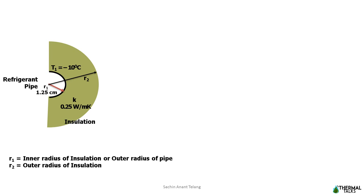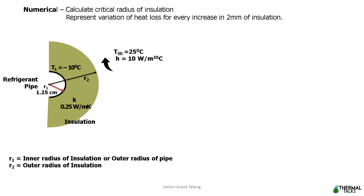Let us quickly take a simple example to understand it better. There is a refrigerant pipe of outside radius 1.25 centimeter maintained at constant temperature of minus 10 degrees Celsius throughout its length. We must provide insulation of thermal conductivity 0.25 W/m·K so that heat will not be lost. The pipe is exposed to ambient air at temperature T-infinity of 25 degrees Celsius and convective heat transfer coefficient H of 10 W/m²·°C. We calculate the critical radius of insulation and represent the variation of heat loss for every increase of 2 mm of insulation.